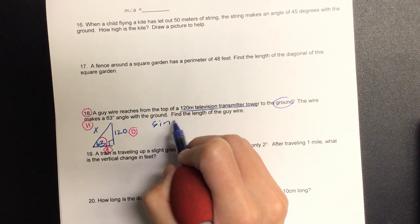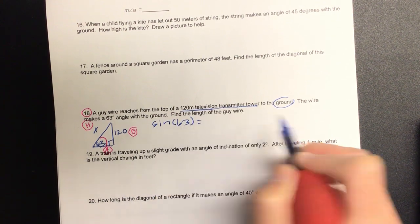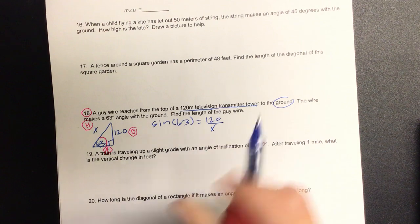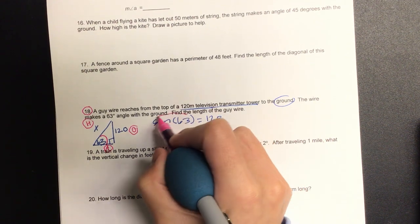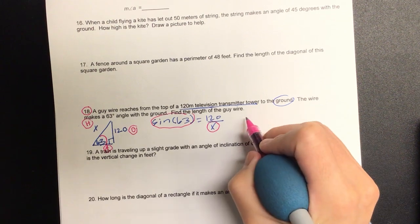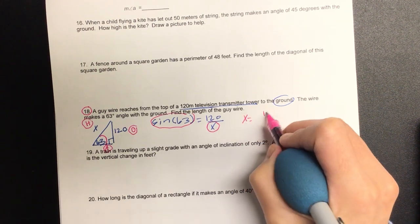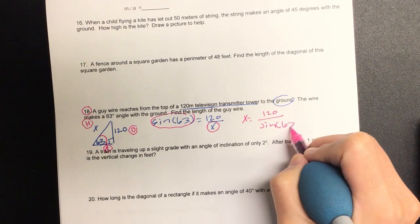So involving one hundred twenty and x, which trig operation are we looking at? Sine. So we have sine of the angle sixty-three equals one hundred twenty over the x. Again, what can I do since I have the all variable on the bottom? Swap. So when I do, I get x equals one hundred twenty over sine of sixty-three.